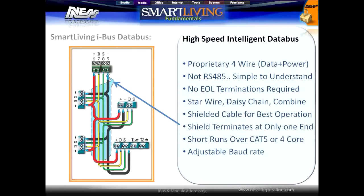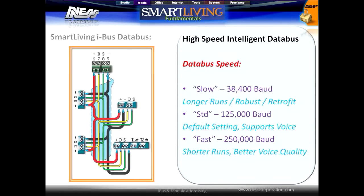An adjustable baud rate allows the data bus to be adjusted for best performance on large jobs. The slower speed allows for longer cable runs but doesn't support voice function. At the faster rate it offers much better voice quality but with shorter cable runs. By default, the standard rate should be fine for most jobs.